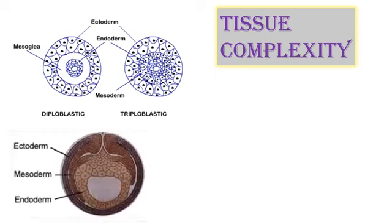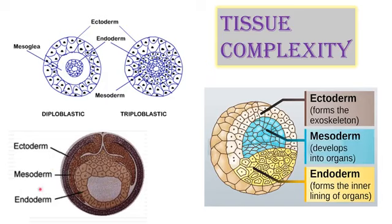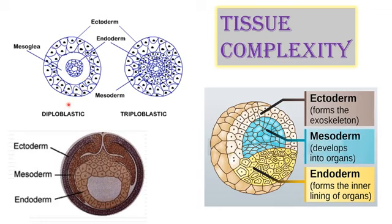The tissues and organs of an animal originate from two or three germ layers of its embryo — ectoderm, mesoderm, and endoderm. Based on how many layers form the animal, it is called diploblastic or triploblastic. If the developing embryo forms only two germinal layers — ectoderm and endoderm — it is diploblastic. Between the ectoderm and endoderm, an undifferentiated tissue called mesoglea is present. This is seen in corals, jellyfish, and cnidarians.